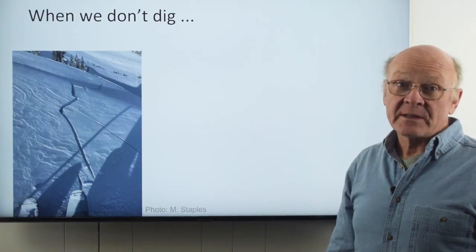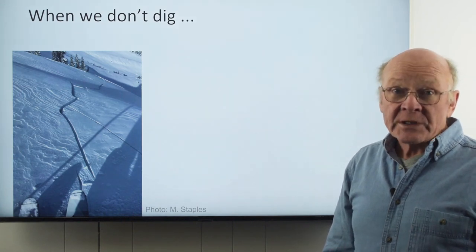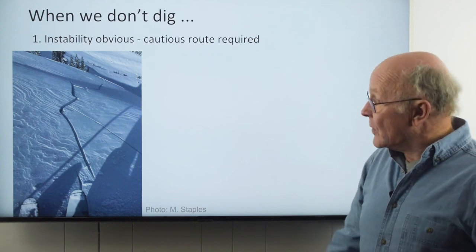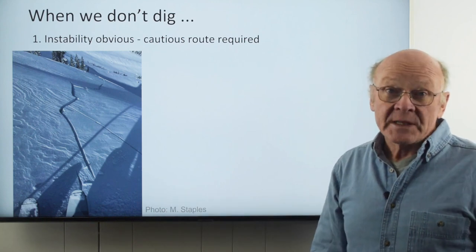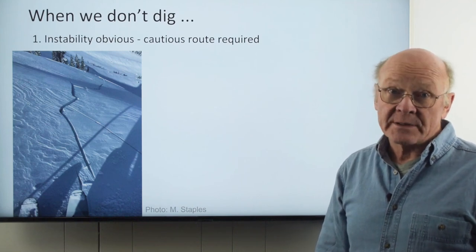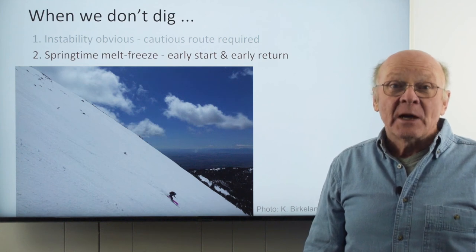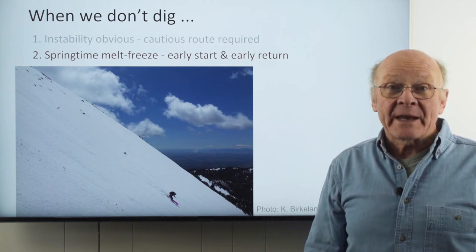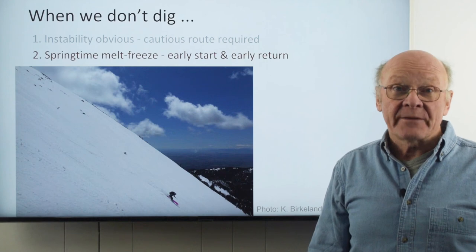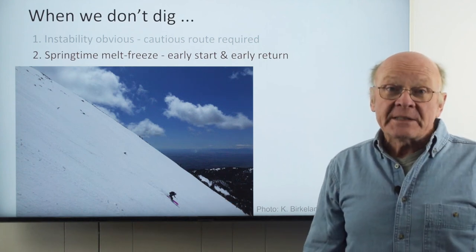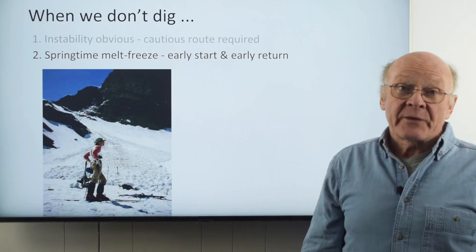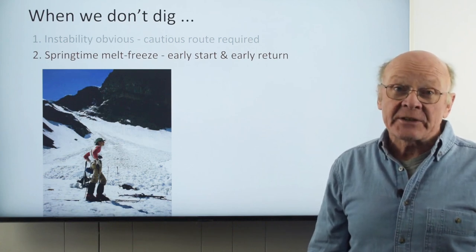Now let's look at situations in which we often don't do instability tests. First, the instability might be obvious from the bulletin or observations — if we see recent avalanches, shooting cracks, or are feeling woomphs, we select a cautious route that avoids any slope that can produce an avalanche big enough to bury or kill a person. Second, in the spring when the upper snowpack has melted and refrozen many times, we want to plan and manage our day so we're descending where and when less than an inch of surface snow has softened. This means an early start — wet avalanches often occur at midday.